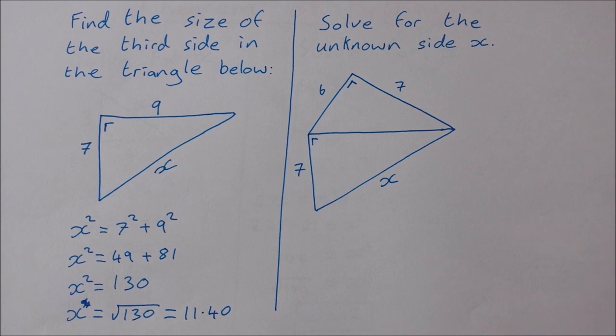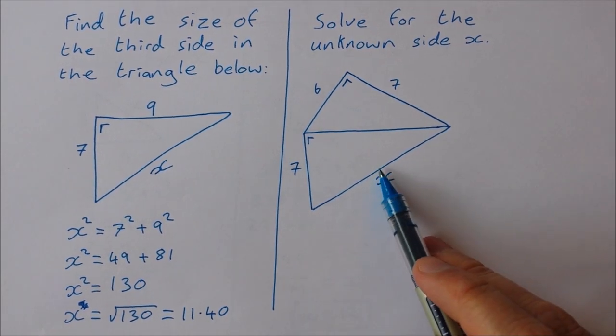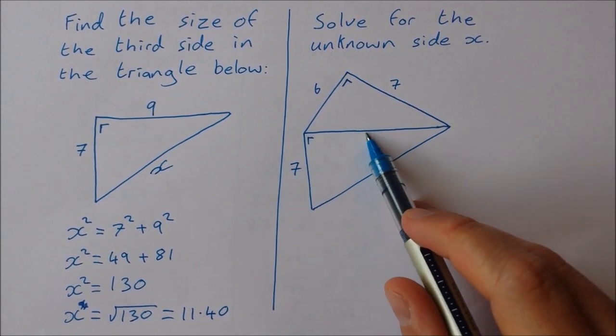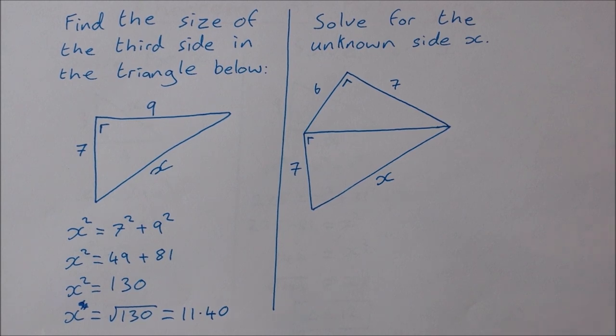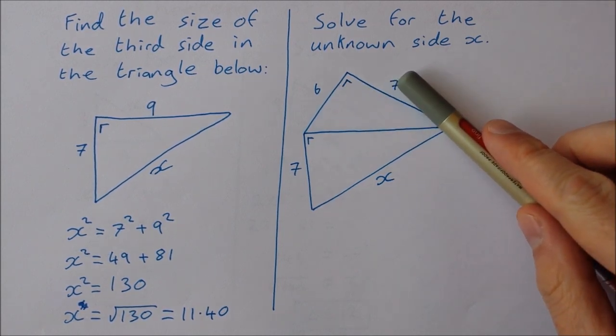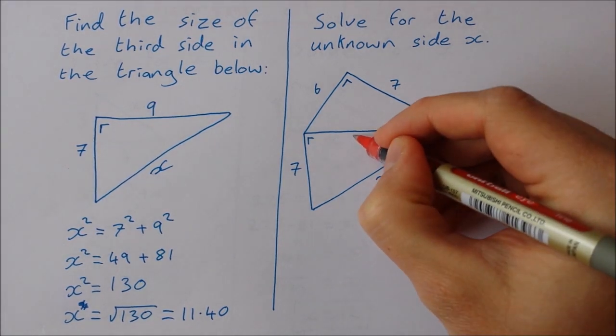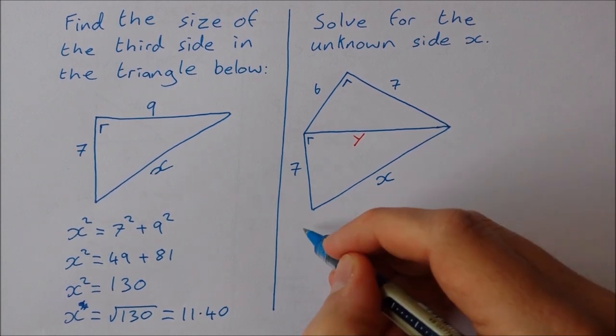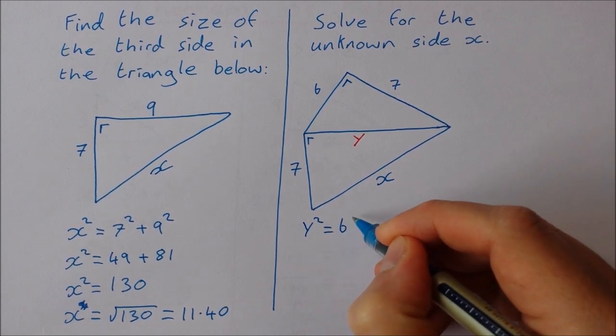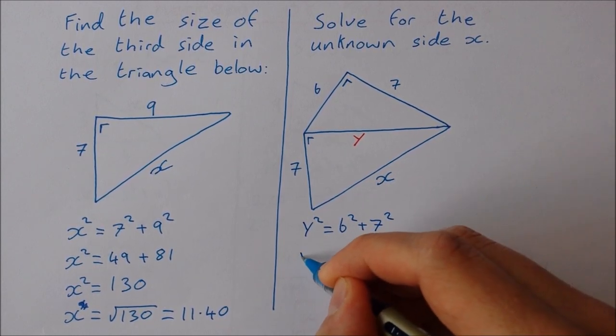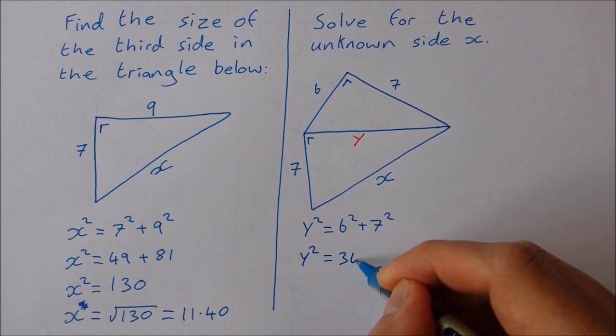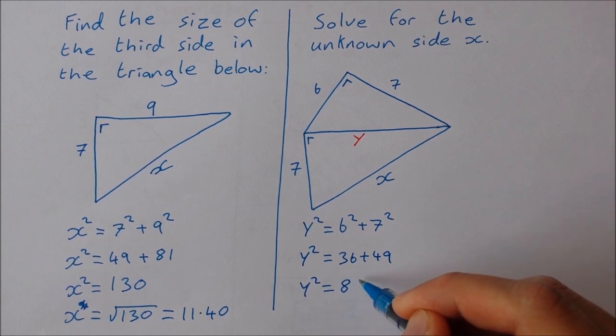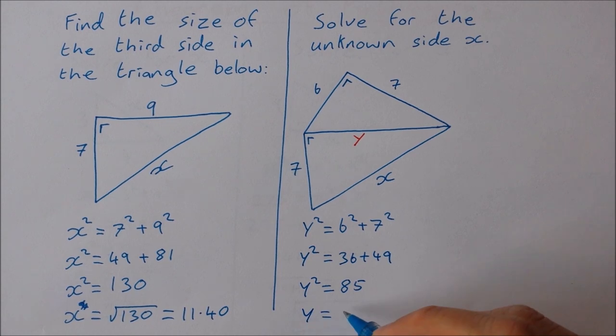Now in this next question, we're asked to solve for the unknown side x. That's this one here. We have a right angle triangle where we have 7, we have x, but this side is also unknown. Now we have this right angle triangle at the top 6, 7, and this unknown side. So I'm going to call that unknown side y. First we'll solve for y, then we can solve for x. So y squared equals 6 squared plus 7 squared. Y squared is equal to 36 plus 49. So y squared is equal to 85, and y is equal to the square root of 85.